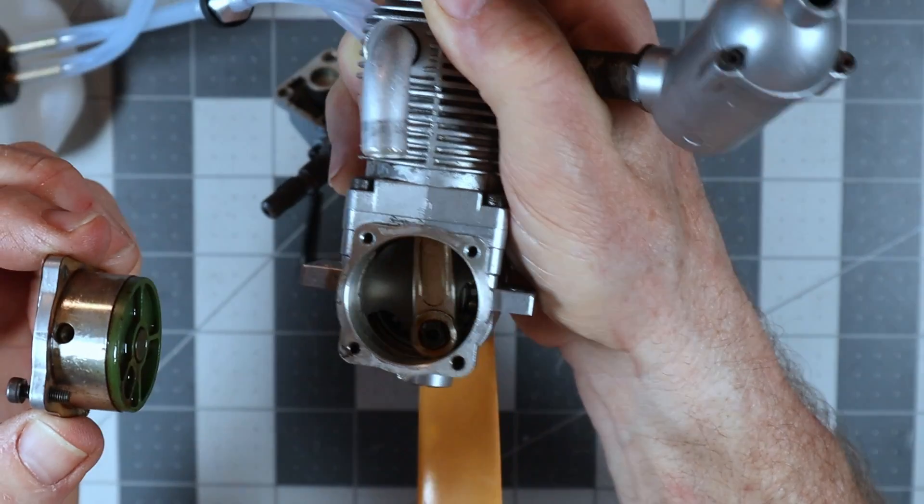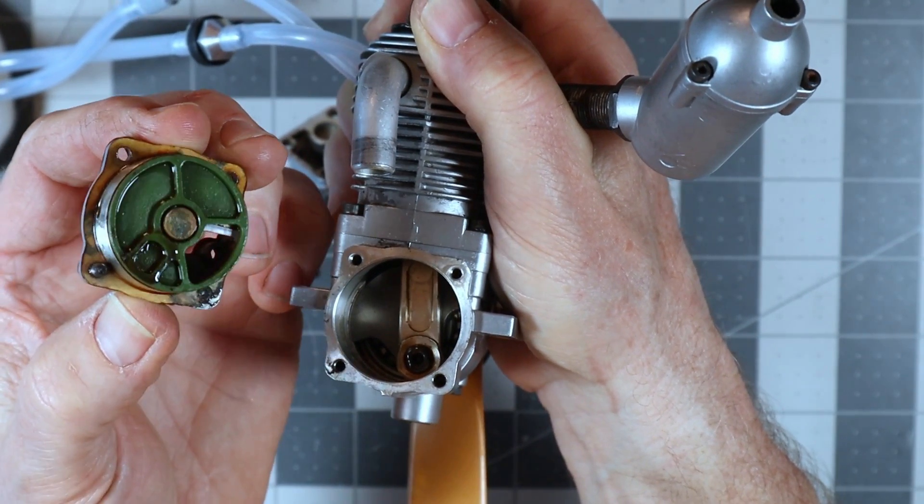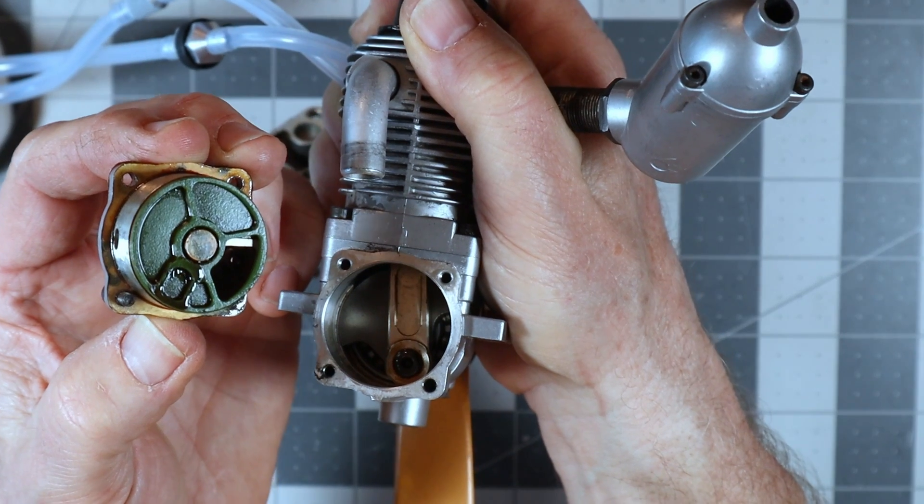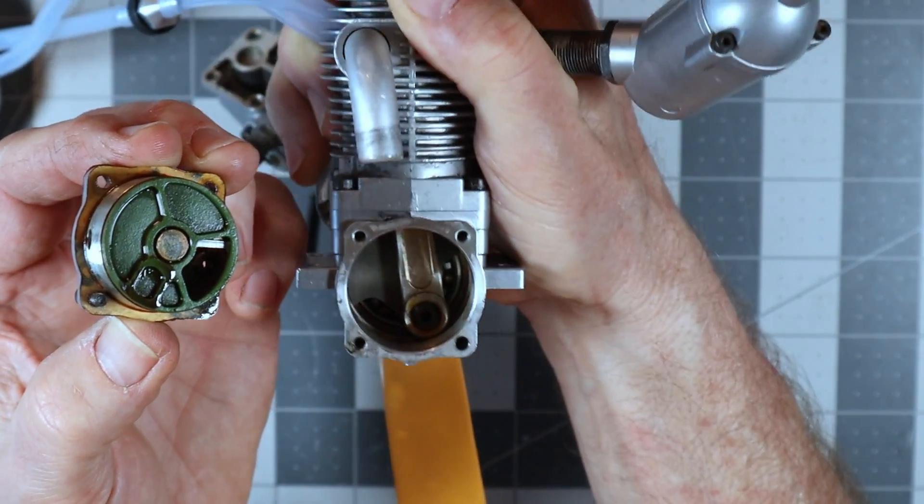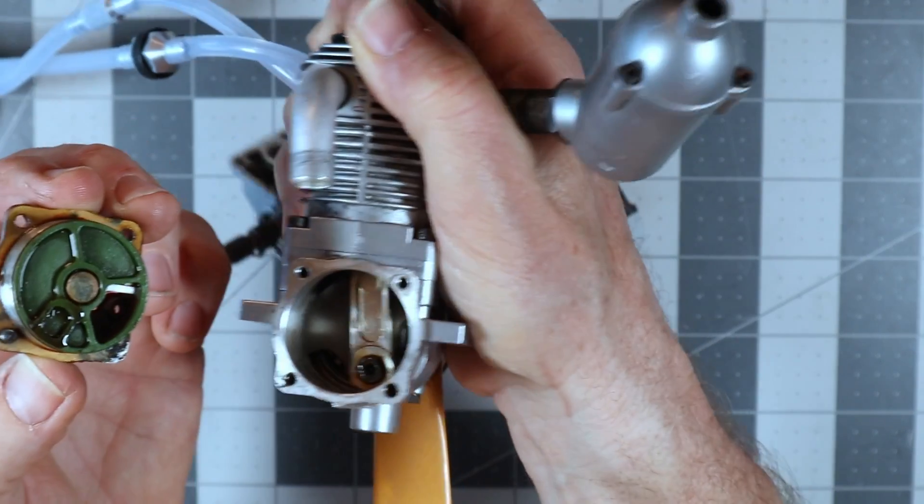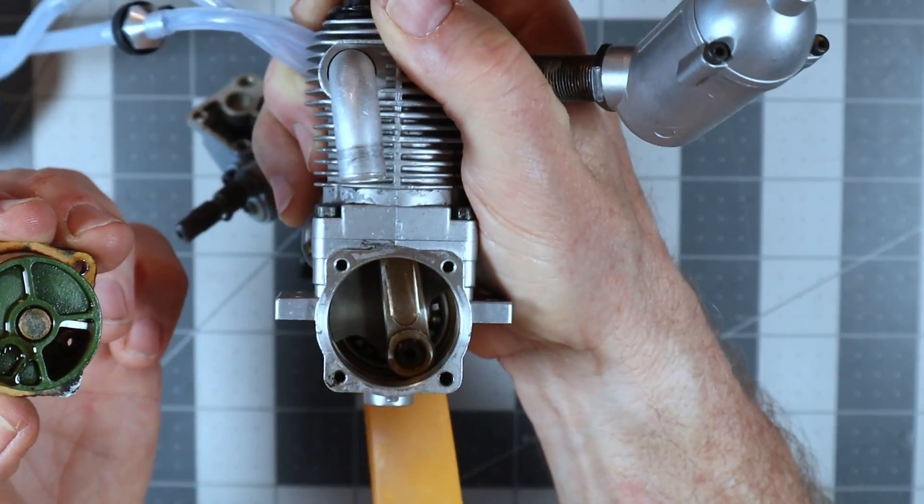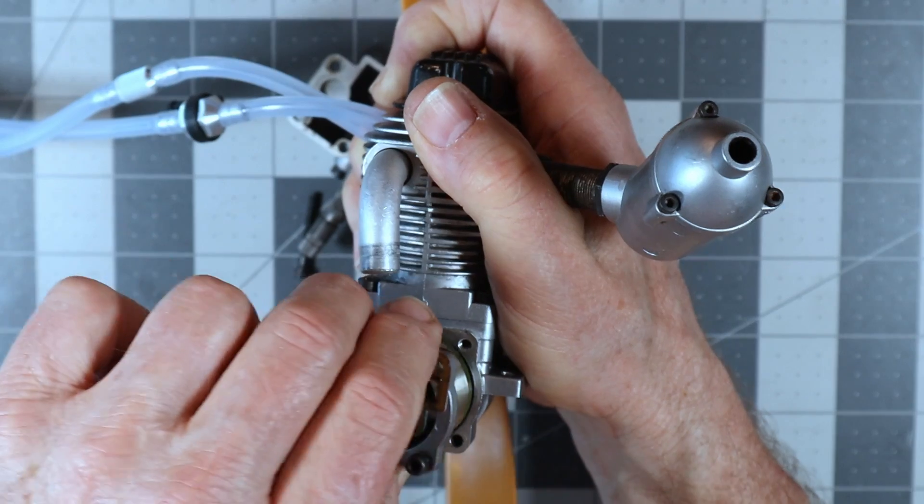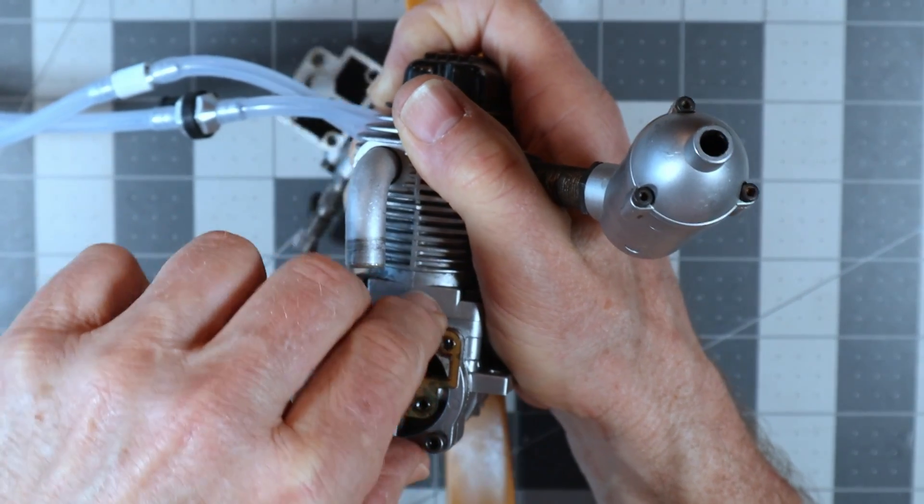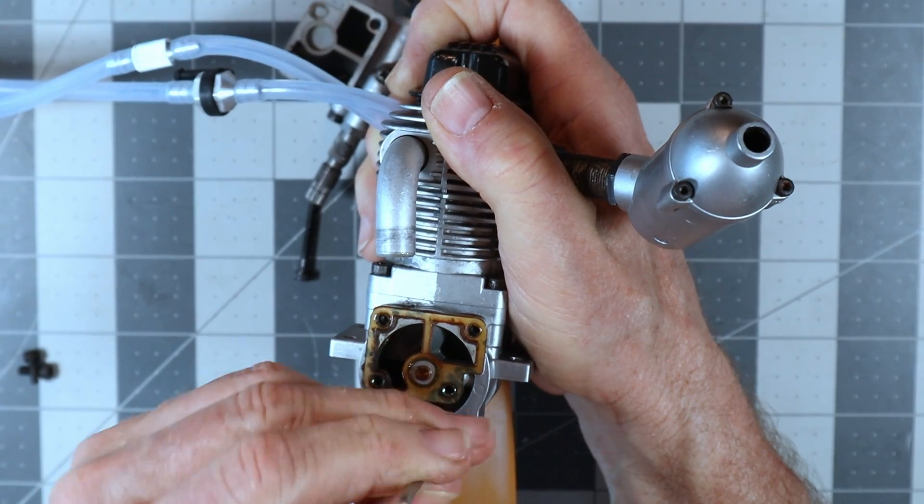So hopefully you can see how pristine that is. See that thing just above my thumbnail tip? That's where the crankshaft into the connecting rod engages. I don't know if you can really get the beauty of seeing how clean that rear bearing is.